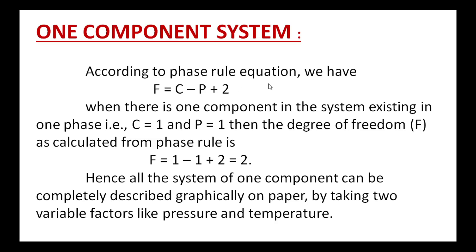One-component system. According to the Phase Rule equation, F is equal to C minus P plus 2. When there is one component in the system existing in one phase, that is C is equal to 1 and P is equal to 1, the degree of freedom F is calculated as: F = 1 minus 1 plus 2, which is equal to 2.